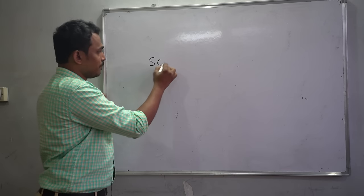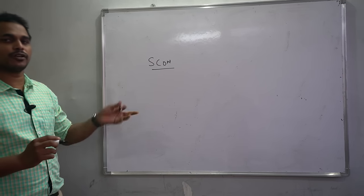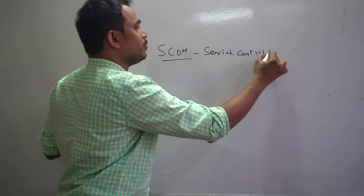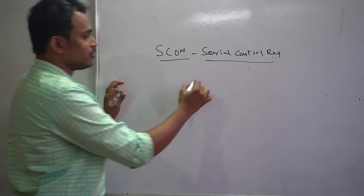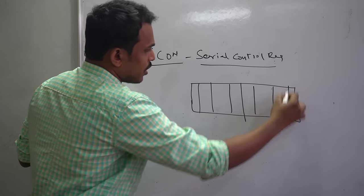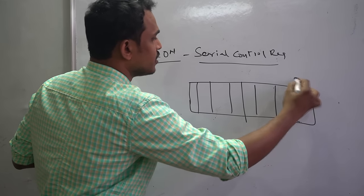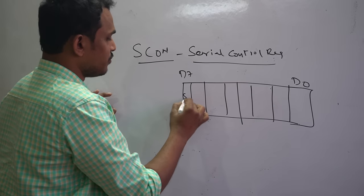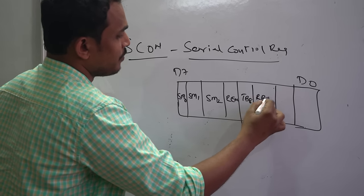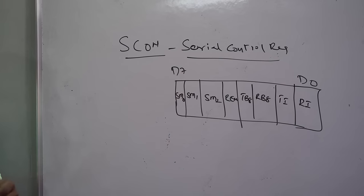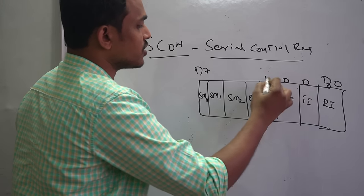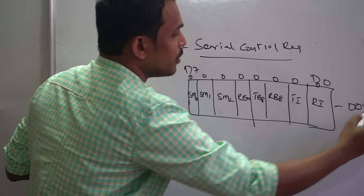The SCON register, which stands for Serial Control Register, needs to be programmed to establish serial communication between a microcontroller and peripherals. It is an 8-bit register with bits D0 to D7. The bits are named SM0, SM1, SM2, REN, TB8, RB8, TI, and RI. By default, all bits maintain logic 0.